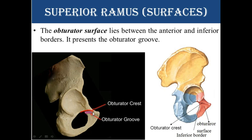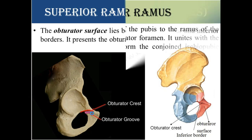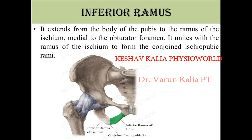The inferior ramus extends from the body of the pubis to the ramus of the ischium. It unites with the ramus of the ischium to form the conjoined ischiopubic ramus. The inferior ramus of pubis starts at the body and goes down to join the inferior ramus of the ischium.